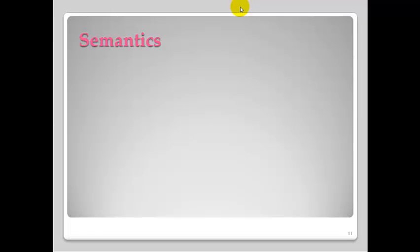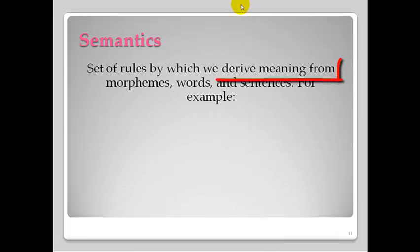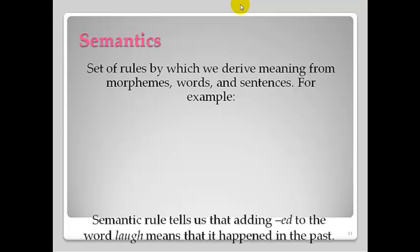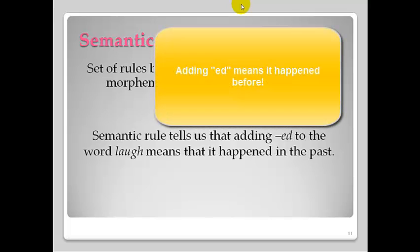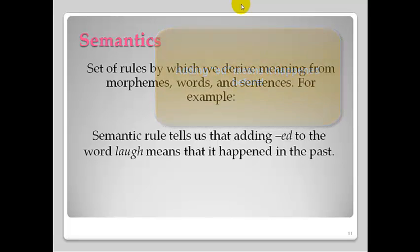Let's look at semantics in the English language quickly. This is a set of rules by which we can derive meaning from our morphemes, from our words, and from our sentences. So semantics is about how we structure our language to get meaning from statements. We have a semantic rule that tells us adding ed to the end of words, like laugh, means it happened in the past. So that's a semantic rule. Adding ed means past tense, laughed, something that happened in the past.